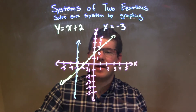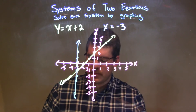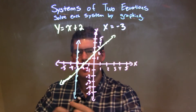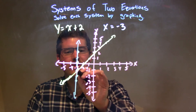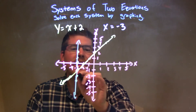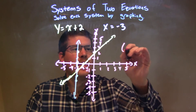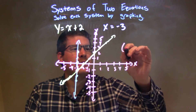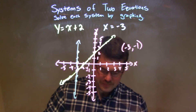We can see we have an intersection right here in the middle. Our intersection is at negative 3, negative 1. So our final answer, where these two lines intersect, is negative 3, negative 1.